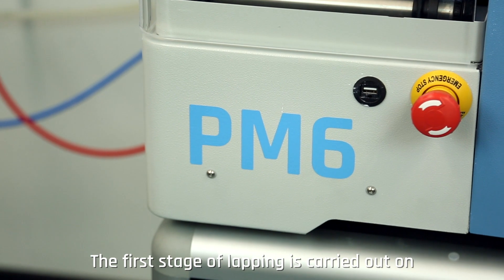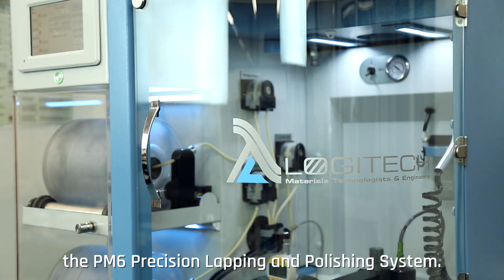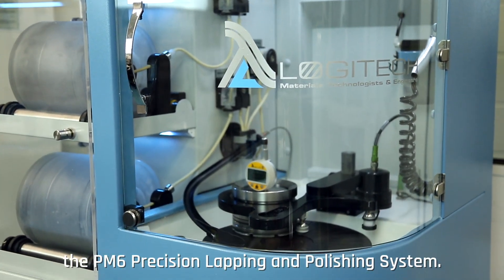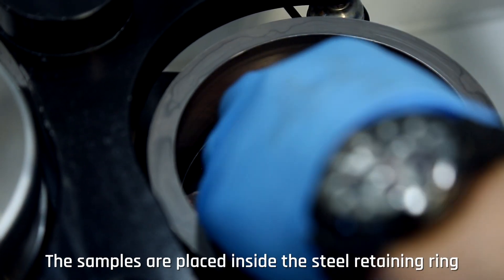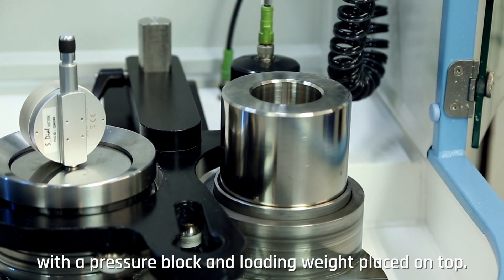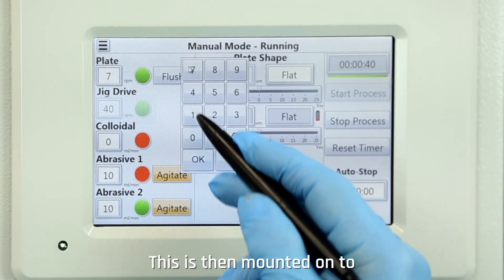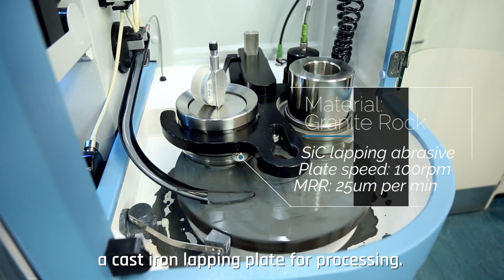The first stage of lapping is carried out on the PM6 Precision Lapping and Polishing System. The samples are placed inside the steel retaining ring with a pressure block and loading weight placed on top. This is then mounted onto a cast iron lapping plate for processing.